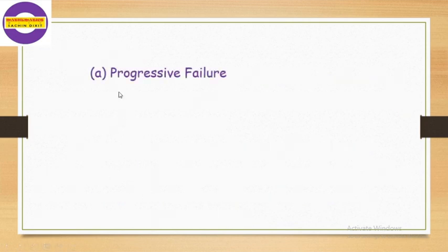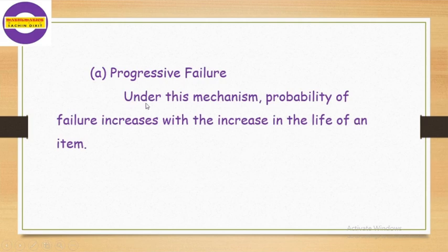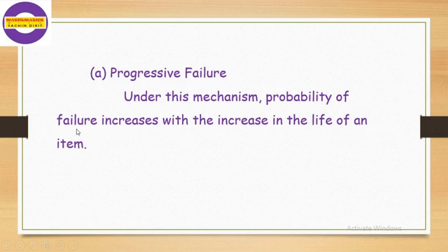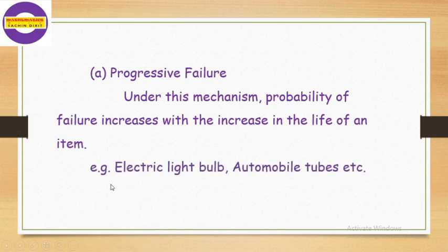First is progressive failure. Under this mechanism, the probability of failure increases with the increase in the life of the item. As the life of the item increases, the probability of failure also increases — this is called progressive failure. Examples include electric light bulbs, automobile tubes, and automobile tires.